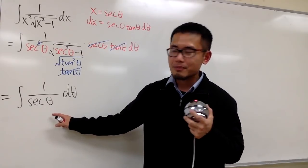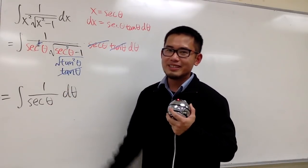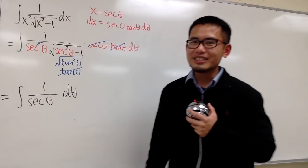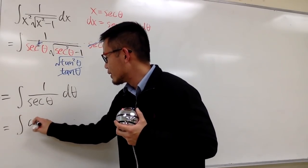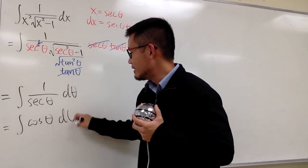Secant is 1 over cosine. And now we have 1 over secant. It's the same as regular cosine. This right here is just integrating cosine theta, d theta.